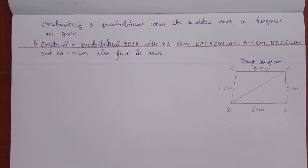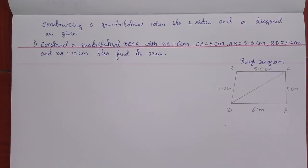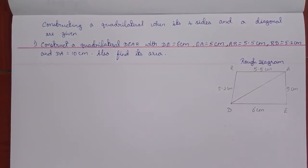Hello students, I am Idhinagarun sir. In this video we will learn how to construct a quadrilateral. A quadrilateral is a four-sided figure. In constructing a quadrilateral, there are five types.